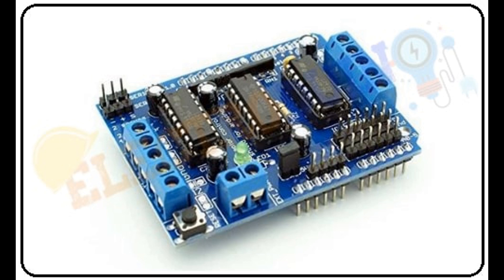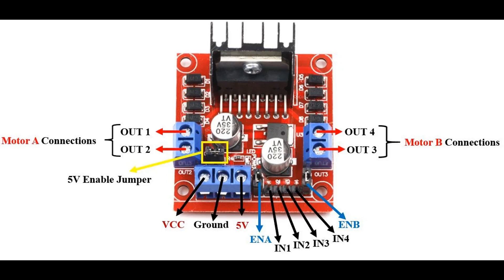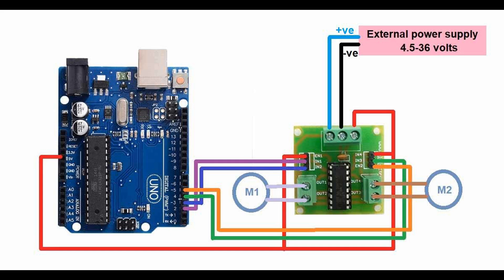Pulse Width Modulation (PWM) circuitry is often used in motor drivers to control motor speed by varying the average voltage supplied. This is done by rapidly switching the motor on and off, adjusting the pulse width to control the motor's effective power. Some motor drivers include PWM capabilities built in, while others rely on an external microcontroller to generate PWM signals. Control logic circuits interpret input signals — e.g., direction and speed — and manage the switching of the transistors to achieve the desired motor behavior. This logic can be simple, using basic transistors, or more complex, with microcontrollers or integrated circuits that provide features like acceleration control, braking, and error detection.